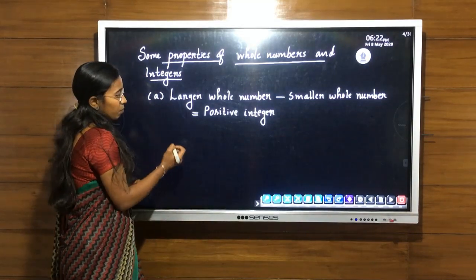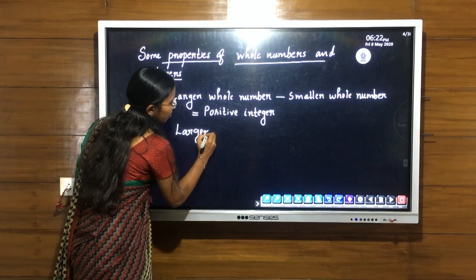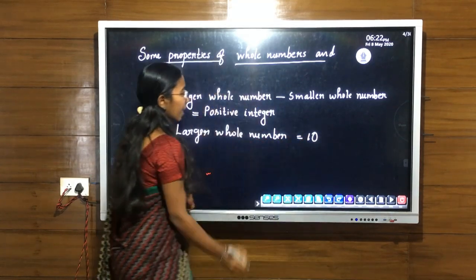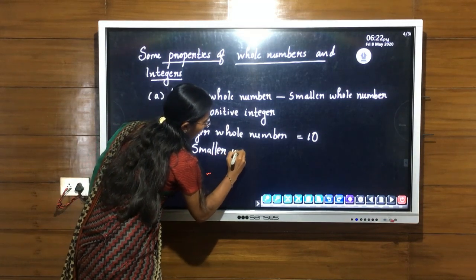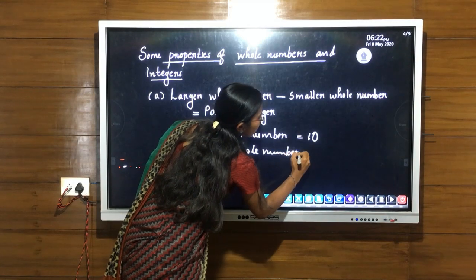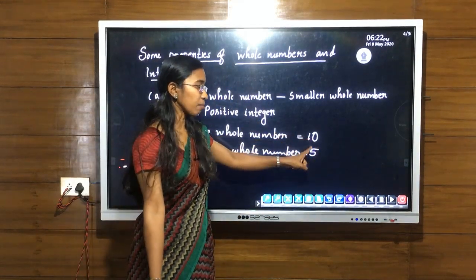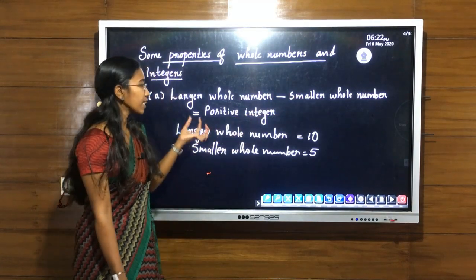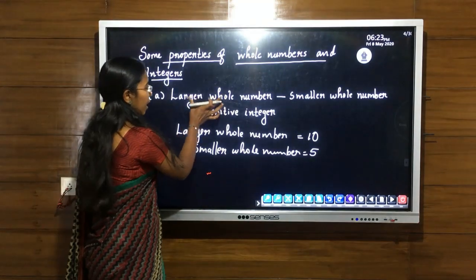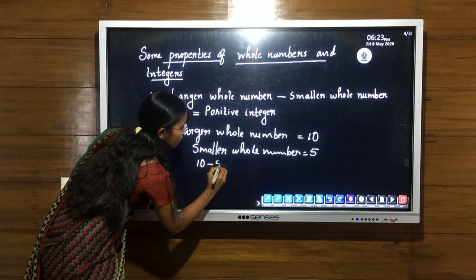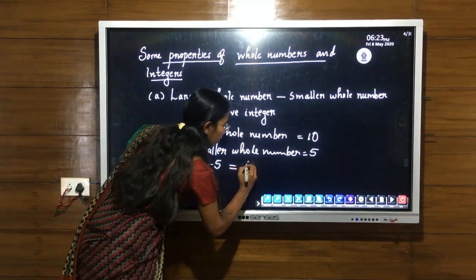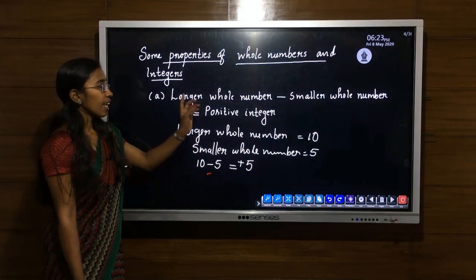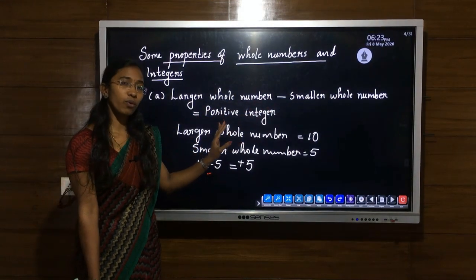For example, suppose I take the larger whole number as 10 and the smaller whole number as 5. Definitely 10 is the larger number and 5 is the smaller number. Substituting into our first property: 10 minus 5. What is the value? That is equal to 5. Since there is no sign, that is positive 5 — which means larger whole number minus smaller whole number always gives a positive integer.